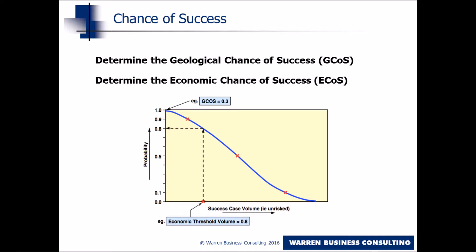If these geological data are turned into a graph showing the probability of reaching different production volumes, the manager can then see the probability that the well will exceed this threshold. Multiplying the geological chance of success by this number, we obtain what is called the economic chance of success — in other words, the risk of profit or loss.